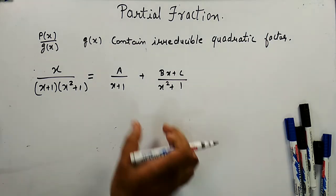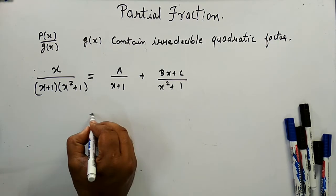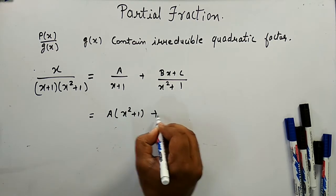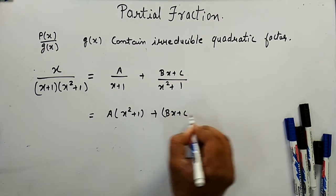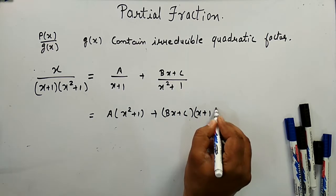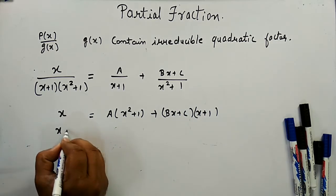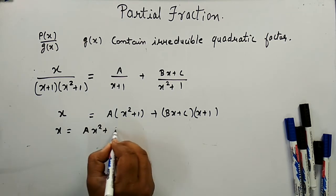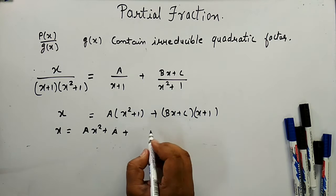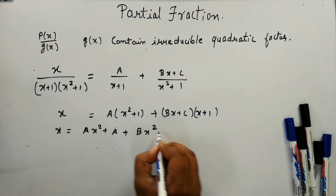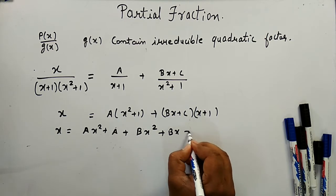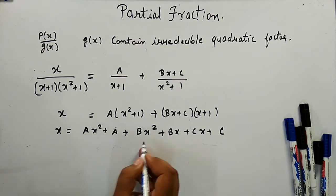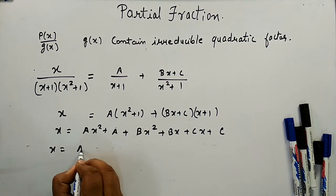Taking the LCM of the two terms on the right-hand side, we get A(x² + 1) + (Bx + C)(x + 1) = x. Multiplying out gives Ax² + A + Bx² + Bx + Cx + C.